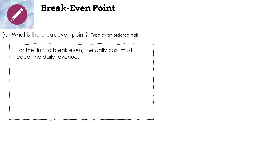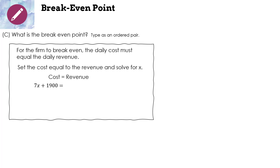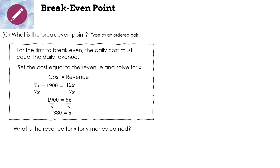What is the break even point? For the firm to break even, the daily cost must equal the daily revenue. Set cost equal to revenue and solve: 7x + 1900 = 12x. Subtract 7x from both sides, then divide by 5 to get x by itself. X = 380 — that's the number of widgets the manufacturer needs to make. The revenue: y = 12x = 12(380) = $4,560.